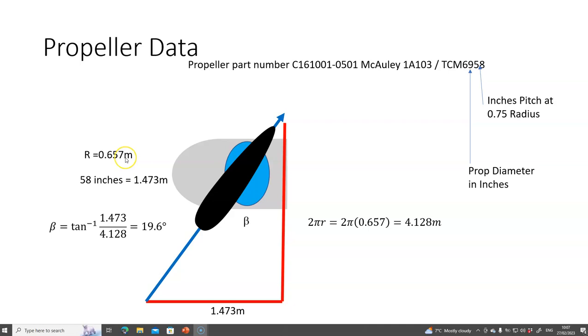One full revolution is 2 pi r, so 2 pi and r is the radius of the propeller at the 75% point, and that is 4.128 meters. When I work out the blade angle, that works out to be approximately 20 degrees.